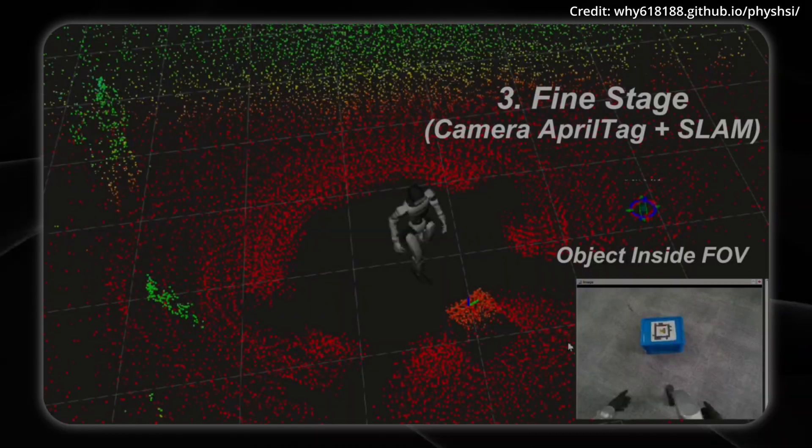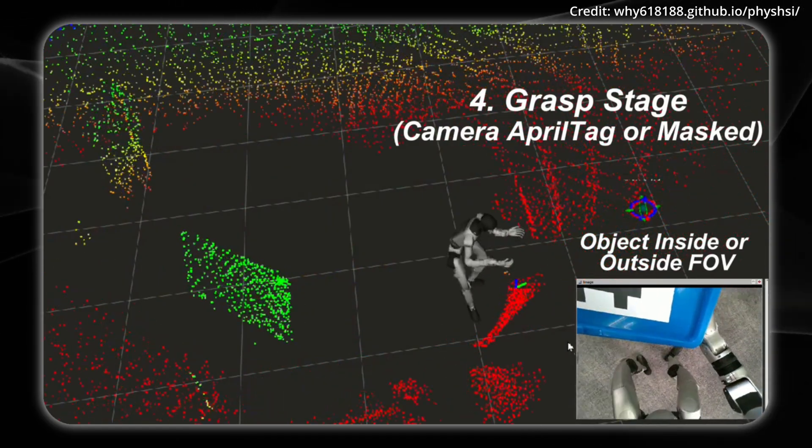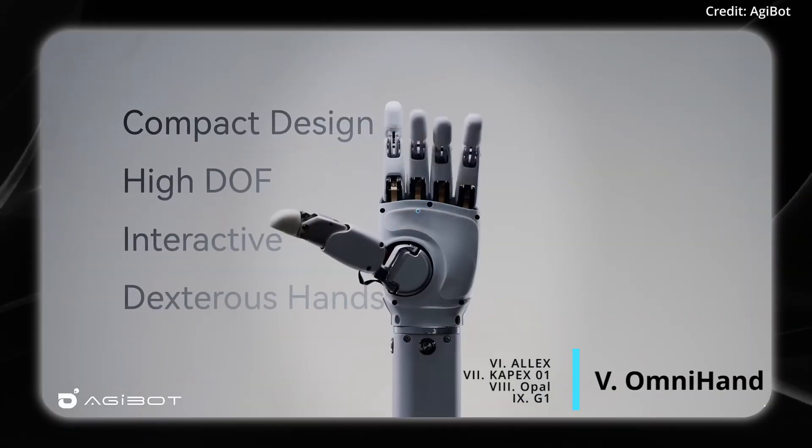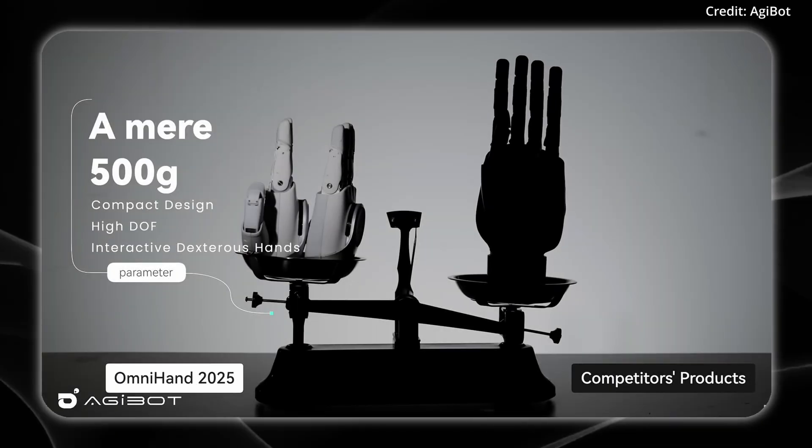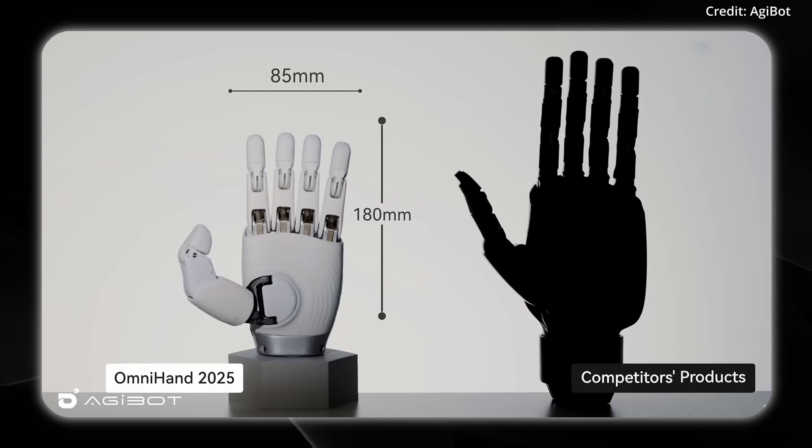And finally, once the target pops into view, the AprilTag visual system jumps in for automatic positioning during the interaction. But for even greater dexterity, AGIBot just released its newest OmniHand, which weighs only 500 grams and has an extremely small form factor of just 180 millimeters, or about 7 inches.